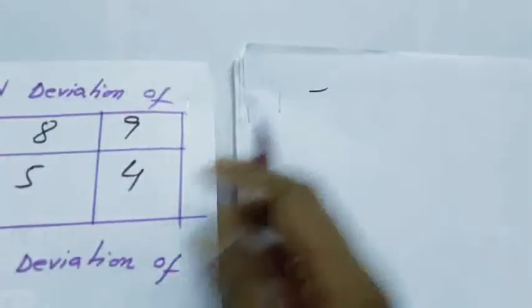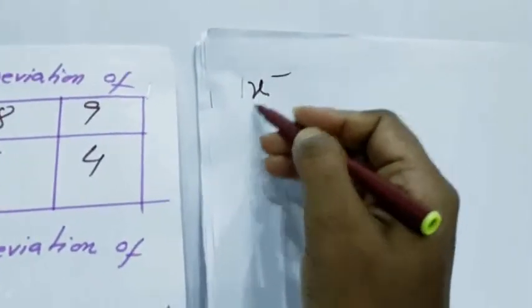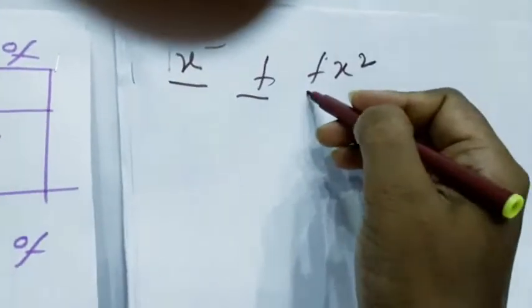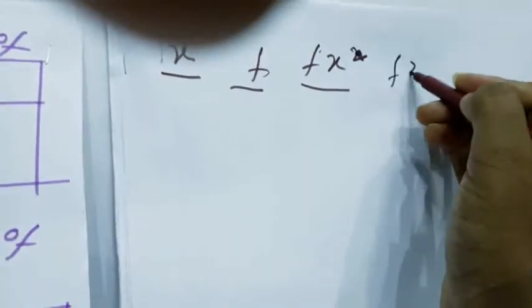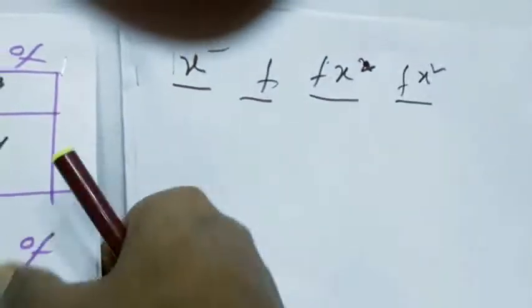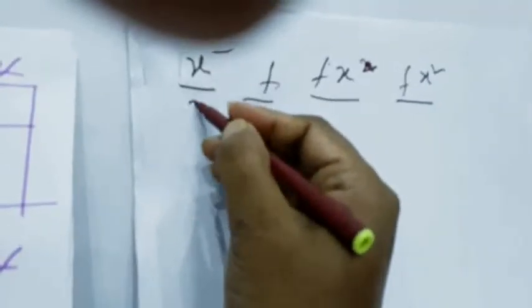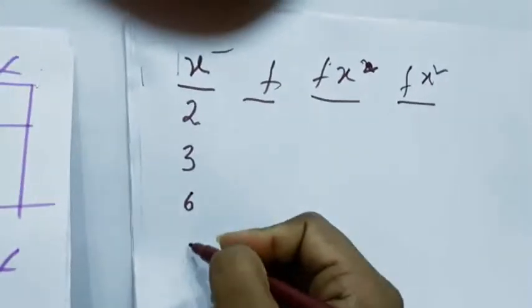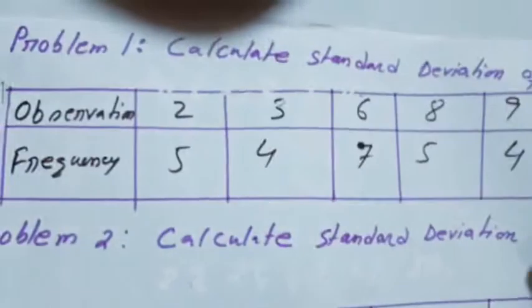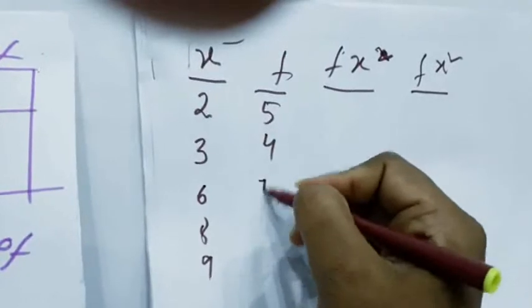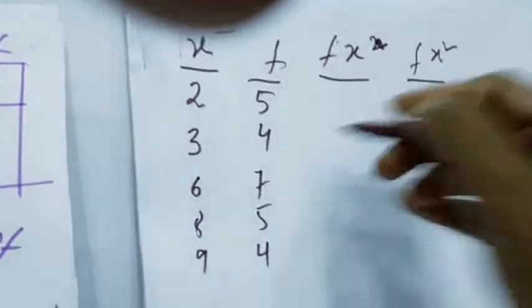Now we will make a table. One column will be x, another will be f, then f x, and another will be f x square. The x values are 2, 3, 6, 8, 9 and the frequencies are 5, 4, 7, 5, 4.